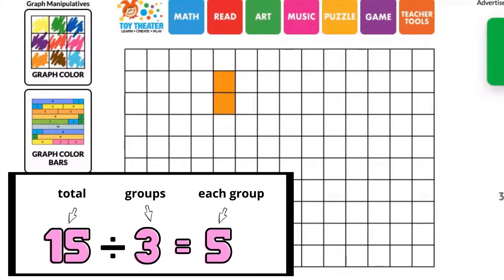Then find graph square. To make an array for 15 divided by 3, you first make 3 groups, 5 in each group.